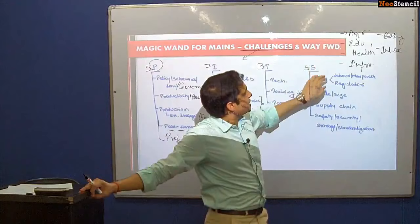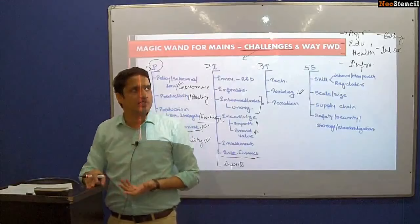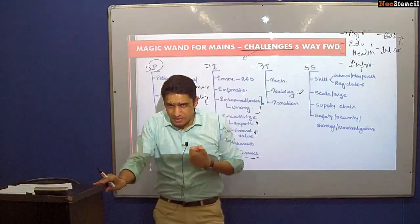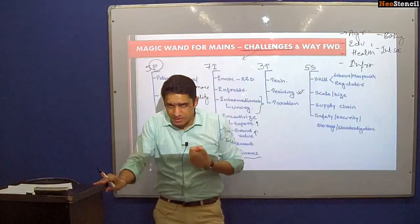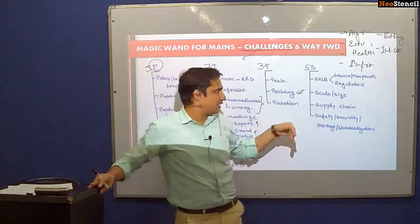The first skill dimension concerns labour, manpower, and cultivators. The second skill is related to the regulator. For example, the model contract act requires a new regulating body, but regulator skill is a major problem everywhere. The whole problem of 2G spectrum arose because the regulator failed to estimate the revenue loss or the negatives. The second problem is related to scale and size — fragmented land holdings in India hinder mechanization.